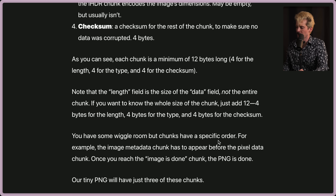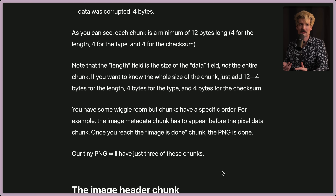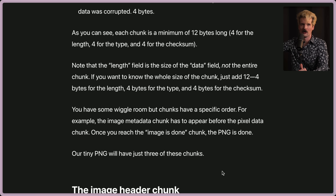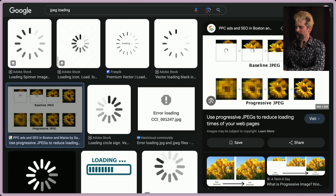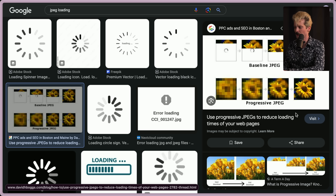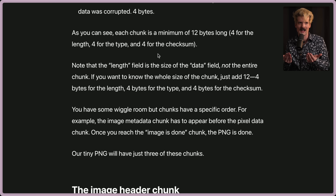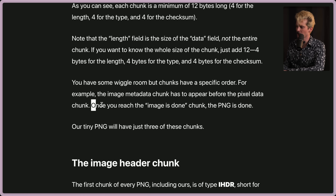Chunks have a specific order — for example, the image metadata chunk has to appear before the pixel data chunk. Once you reach the image-is-done chunk, the PNG is done. Regarding progressive loading: if you've ever seen the old progressive loading of the web with JPEGs, those chunks could come in row by row. This is why we've all seen old websites where individual rows of pictures came in one at a time. PNG has no concept of a progressive JPEG and actually requires you to have most of the data before it can even render the image. But by putting the metadata early, they know the dimensions and can fill additional chunks in over time.